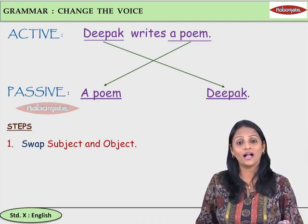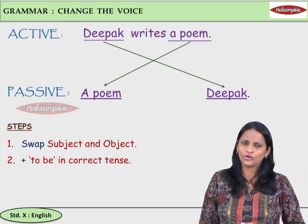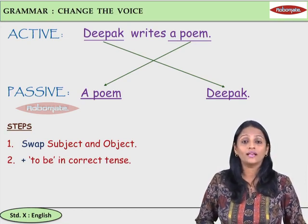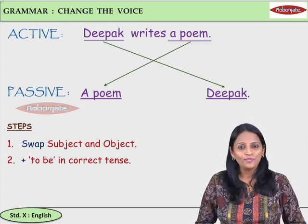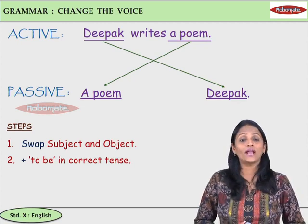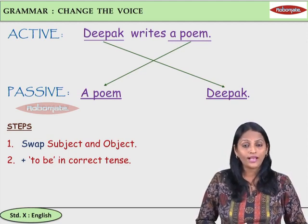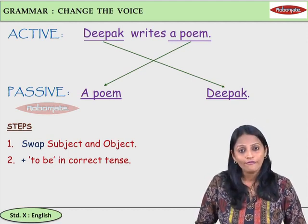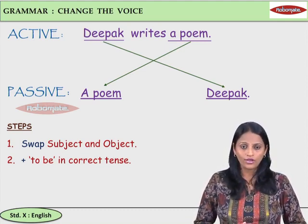We interchange the positions of subject and object. Then, add 'to be' in the correct tense. What do you mean by 'to be in the correct tense'? 'Writes' is simple present tense. In the passive, we need to add the correct 'to be' form. 'To be' is the root verb — the main verb — but there are many forms.